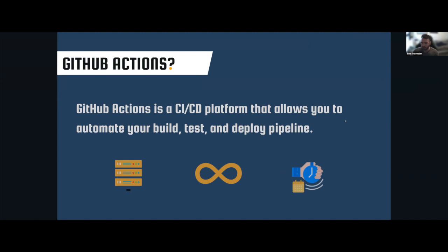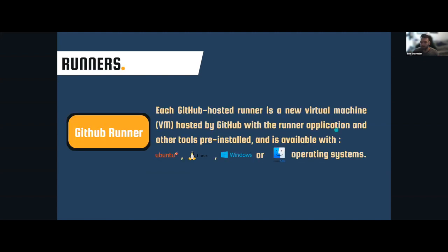When we talk about runners, they are separated into two groups. The first is called a GitHub runner — it's hosted on GitHub itself, running on Azure servers, and there's a window for when you can use them. They come with some pre-built tools such as Docker, for example on Linux distros and Ubuntu, but not on Windows or Mac.